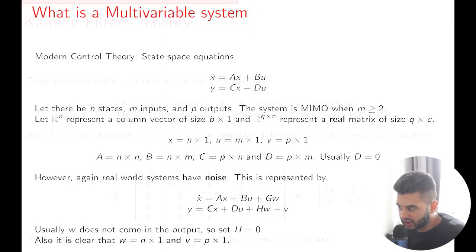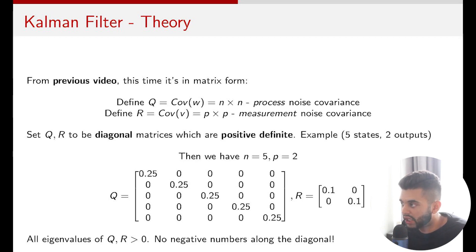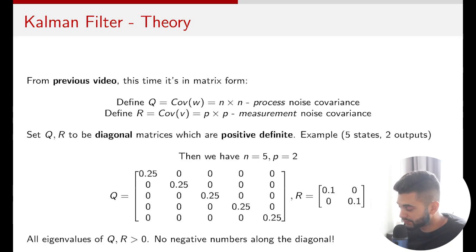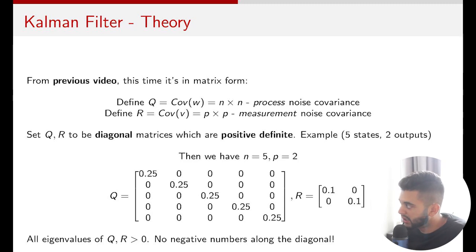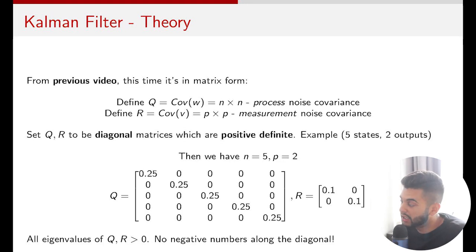In my last video on Kalman filters, Q and R were scalar terms because it was a 1D filter. This time it is more involved: Q is n-by-n and R is p-by-p. Q and R must be diagonal and positive definite. For example, if you have five states and two outputs, Q will be 5-by-5 and R will be 2-by-2. All eigenvalues of Q and R must be positive since covariances are squared values.